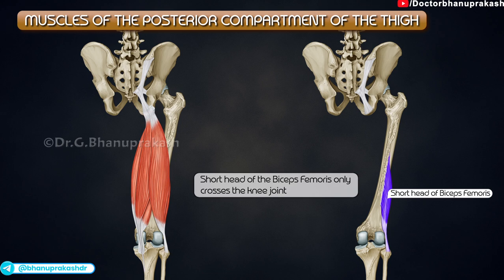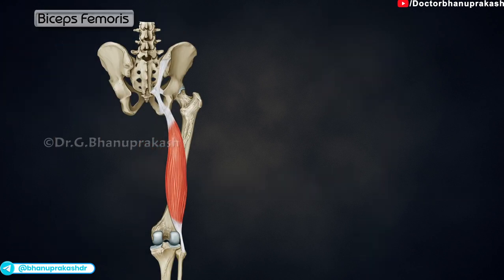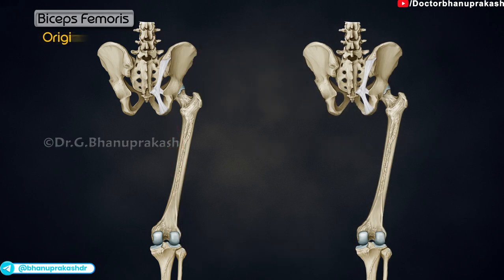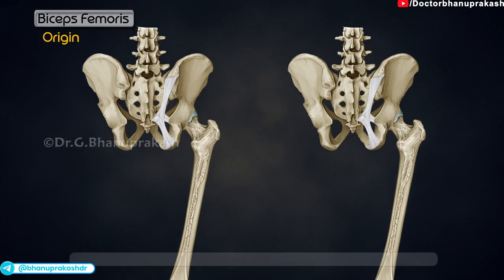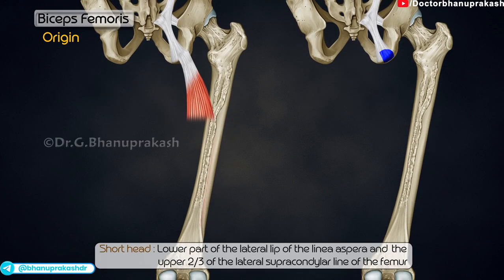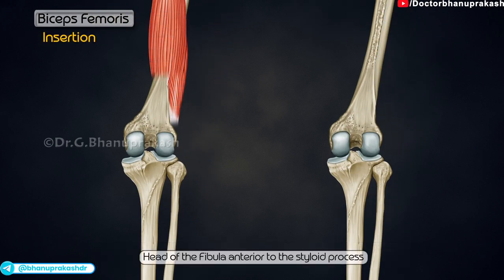Biceps femoris has a long and a short head. The long head arises from the lower medial part of the quadrilateral area of the ischial tuberosity. The short head arises from the lower part of the lateral lip of the linea aspera and the upper two-thirds of the lateral supracondylar line of the femur.